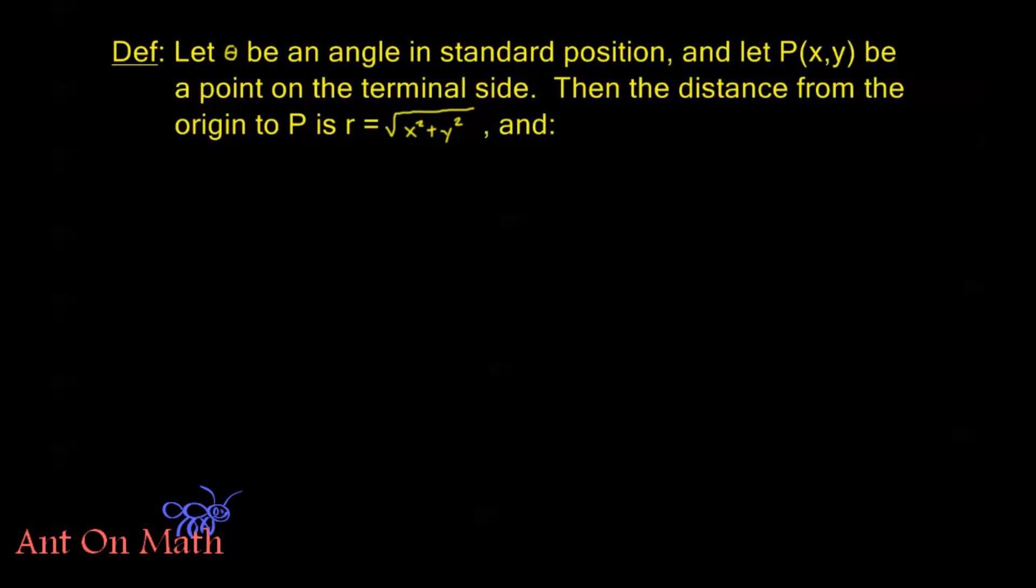So let's take a look. First, a definition: let θ be an angle in standard position, and let P(x,y) be a point on the terminal side. Remember the terminal side of the angle in standard position. Then the distance from the origin to P is r, which is the square root of x² + y². Now before I go ahead and define our trig functions, let me just draw a little picture for us so we can see what's happening.